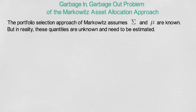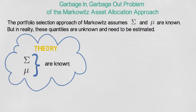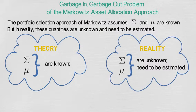The portfolio selection approach of Markowitz assumes that a covariance matrix sigma and the column vector of expected returns mu are known. But in reality these quantities are unknown and they need to be estimated.